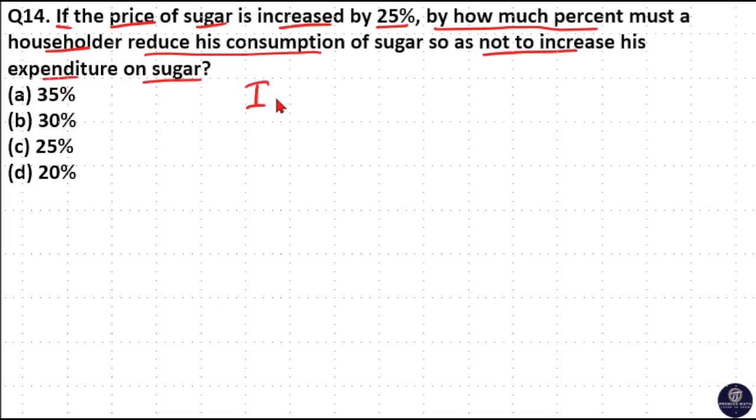Let us consider initial expenditure of sugar as 100 rupees. Now the price is increased by 25%, means new expenditure is 100 plus 25, 125 rupees.